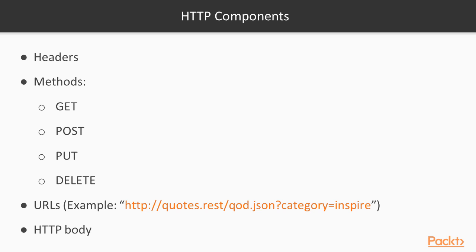For example, if we're expecting the HTTP request to be sending a JSON object, we can define a header to specify that the HTTP request body contains JSON data. The next component is the HTTP method. There are multiple types of HTTP methods supported by the protocol. In the world of RESTful APIs, there are four main method types used frequently: the GET method, the POST method, the PUT method, and the DELETE method.